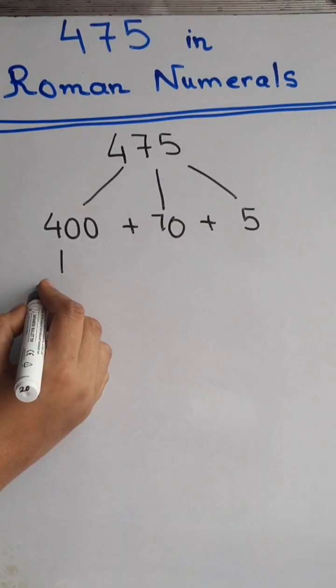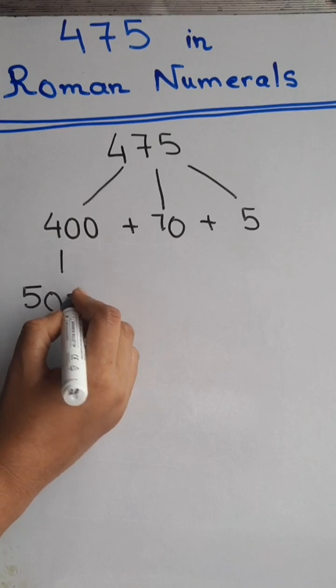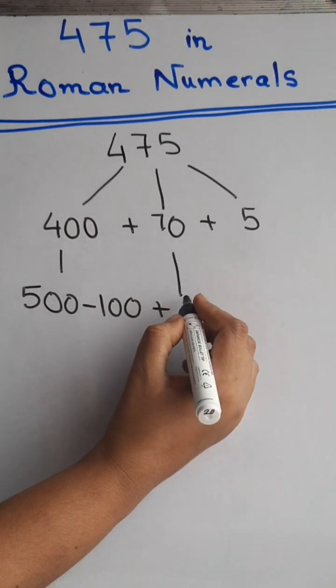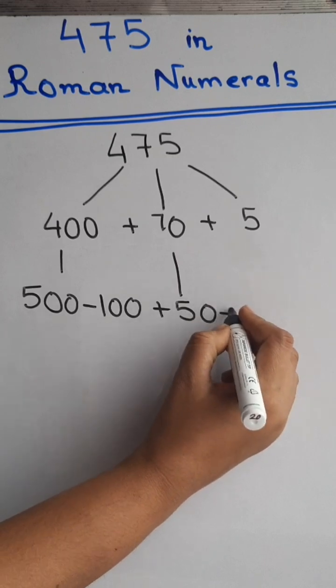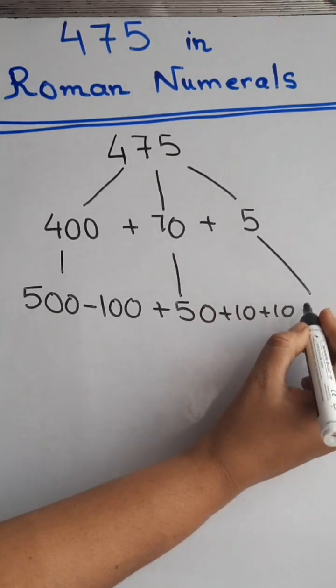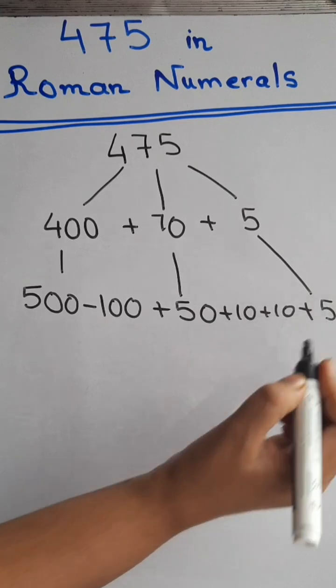Now, 400 can be broken down and written as 500 minus 100. 70 can be written as 50 plus 10 plus 10. And 5 will be written as it is.